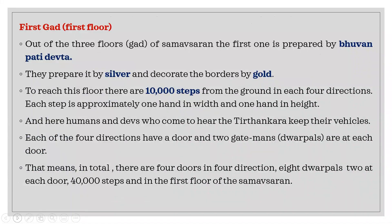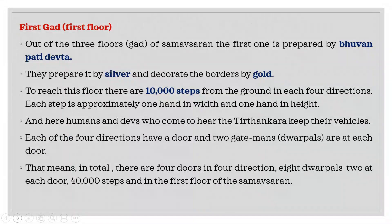The Bhuvanpati Devtas construct the bottommost Gharad where all vehicles are parked. This Gharad is made of silver and decorated with gold. There are 10,000 steps in all four directions leading to this first Gharad. There are four Dvars, one in each direction, and Vyantar Devtas act as Dvarpals. In total there are four doors, eight Dvarpals, and 40,000 steps in four directions.